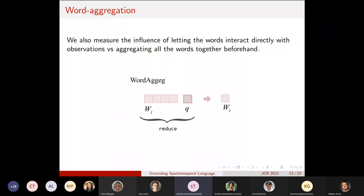So we also measure the influence of letting the words interact directly with the observations or aggregating them as we do for the spatial temporal dimensions of our different architectures before. So this is to study the effect of letting the word tokens interact directly with the objects versus summarizing them in a single token that incorporates the whole language information.